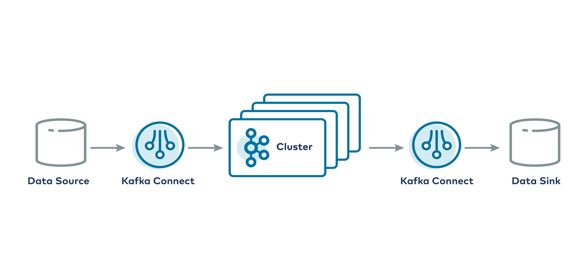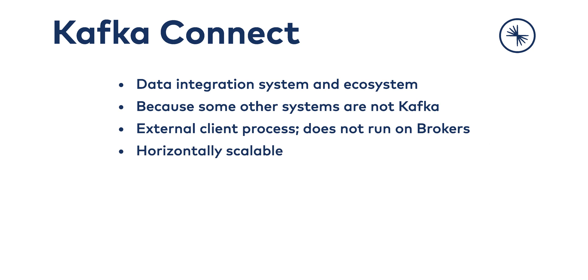As a client application, Connect is a server process that runs on hardware independent of the Kafka brokers themselves — an application running outside the cluster. It is designed to be scalable and fault tolerant, meaning you can run not just one single Connect worker but a cluster of Connect workers, individual nodes running the Connect process to share the load of moving data in and out of Kafka between Kafka and external systems.